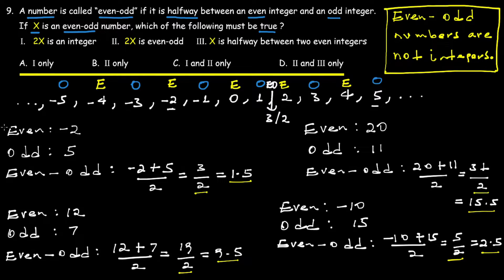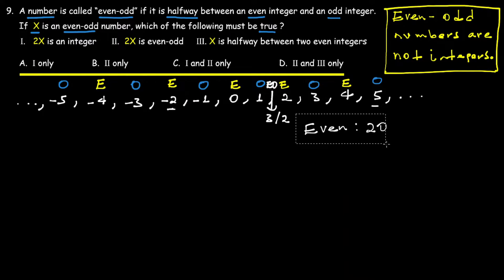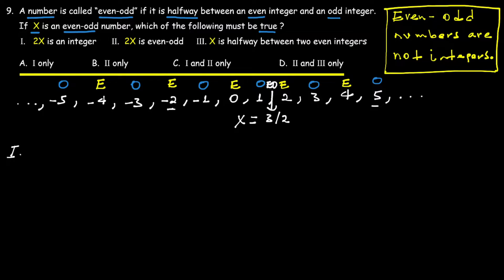Now let's check each statement. For Statement 1, we need to verify whether 2x is an integer. If x is even-odd, then x is halfway between an even and odd integer. Let's evaluate 2 times x to check if it is an integer.